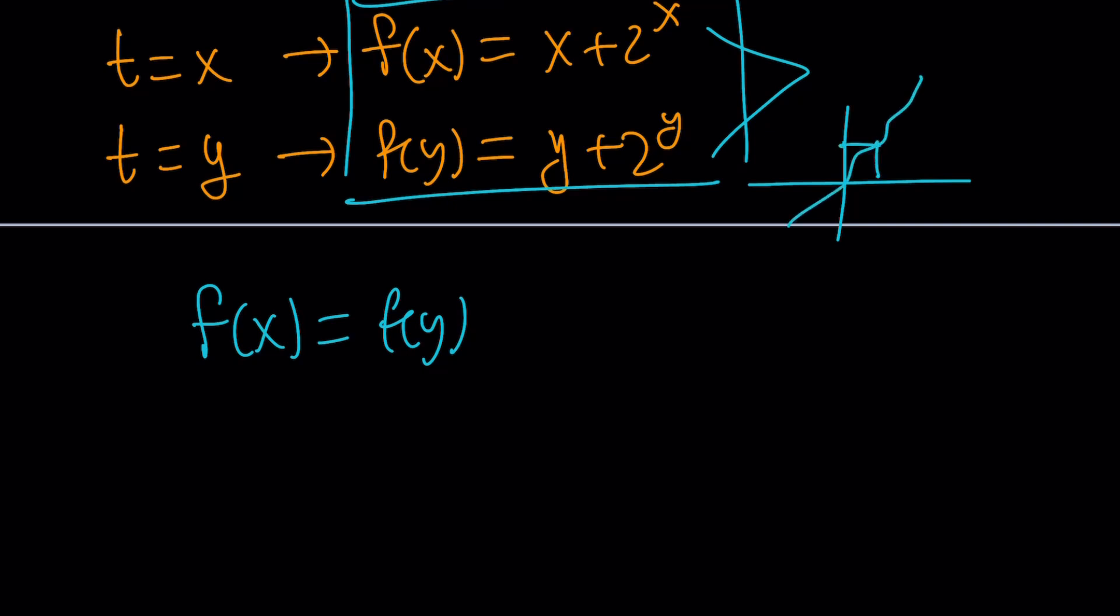If you have a function like this and you evaluate the output at two different inputs, they will be different. But if your function looks like this, then obviously you're going to have more than one t value for which the outputs are the same. What's the difference between these two graphs?